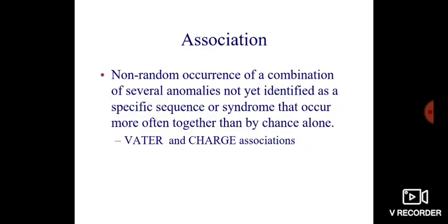An association is also another pattern of anomalies — it is a non-random occurrence of a combination of several anomalies not yet identified as a specific sequence or syndrome, but which occur more often together than by chance alone.